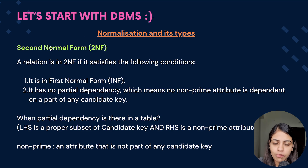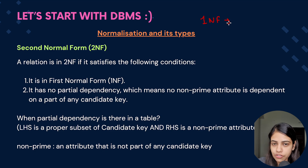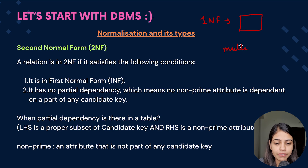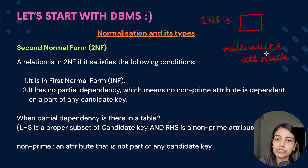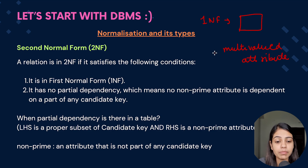Before starting with second normal form, let's revise about first normal form. According to first normal form, in a given table there shouldn't be any multi-valued attribute. Basically there shouldn't be any column which can hold multiple values. The value should always be atomic — there should always be a single value. There shouldn't be any multi-valued attribute present in a given table.